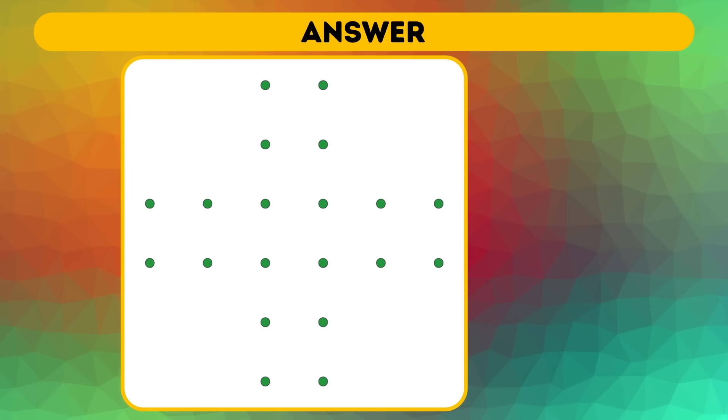The correct answer is 21 squares. That's even more than the number of dots in the cross. Want to know how to find them? Check it out!